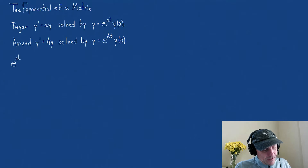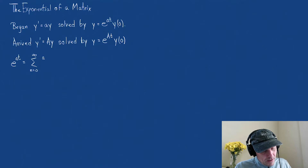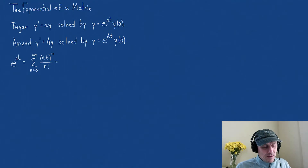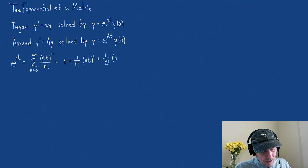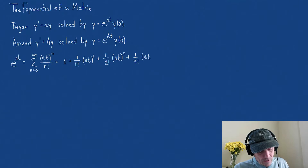If I write e to the a t, you may recall it's also the infinite series — the sum as n goes from 0 to infinity of a times t raised to the nth power divided by n factorial. When n is 0, we get a t to the 0 over 0 factorial, which is just 1. Then we get 1 over 1 factorial times a t to the first, plus 1 over 2 factorial times a t squared, plus 1 over 3 factorial times a t cubed.